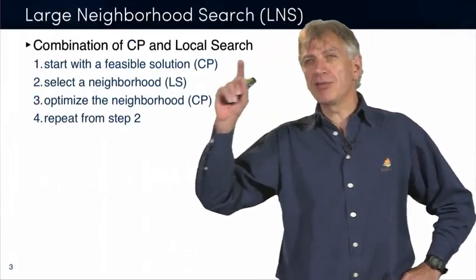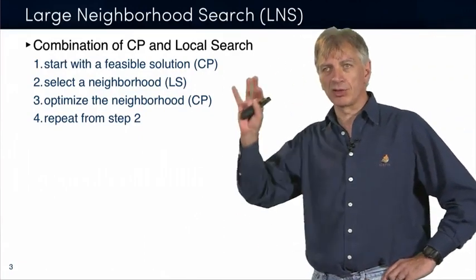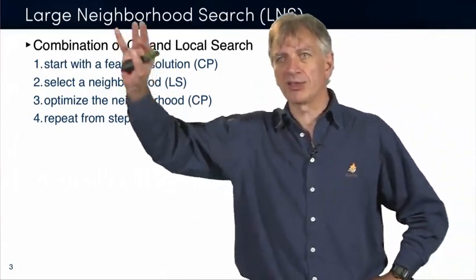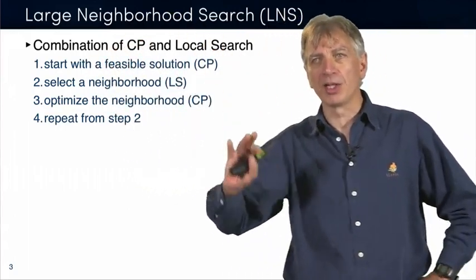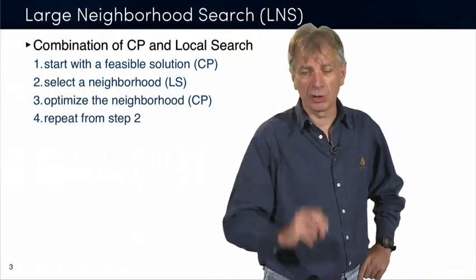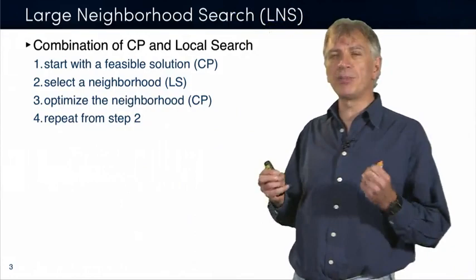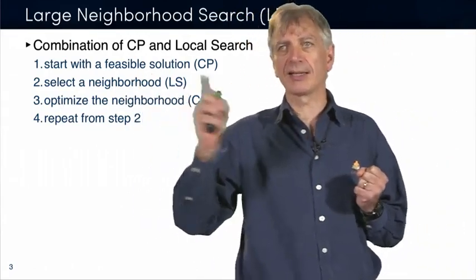So let me give you the first intuition using CP. That's where it originated from, and it's also where it's mostly used these days. What you do is combine CP and local search, and you start with the first step, which is finding a feasible solution using CP. You know by now that CP is very good for finding feasible solutions. It exploits all these combinatorics to find that.